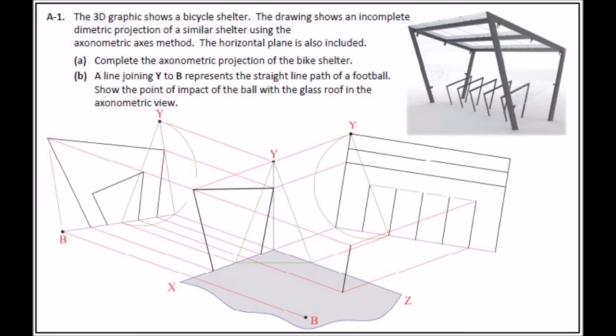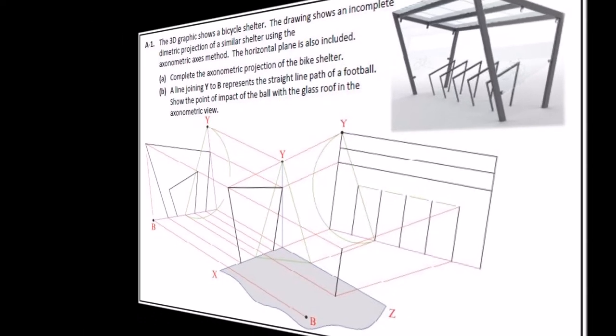So the first one, A1, the 3D graphic shows bicycle shelter. Completing axonometric views, straightforward enough, quick and easy. And then your Y to B, that straight line crossing the roof, that should be straightforward enough. So a nice question there in A1.